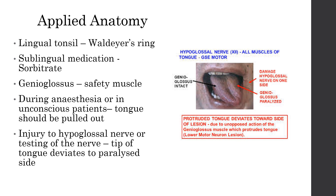The genioglossus is a safety muscle of the tongue, and so the tongue has to be pulled out especially during anesthesia or in unconscious patients to prevent the fall of the tongue backwards. To test injury to the hypoglossal nerve or testing of the genioglossus, it is done by asking the patient to protrude his tongue. If the tip of the tongue deviates to one side, then one genioglossus is paralyzed.